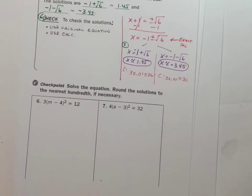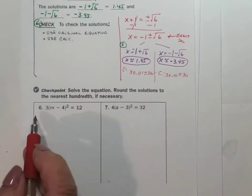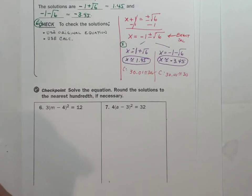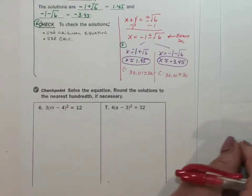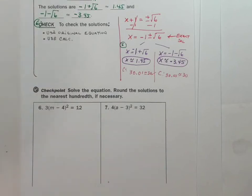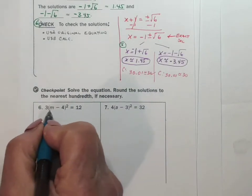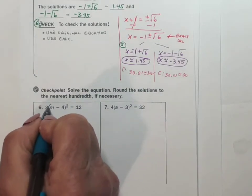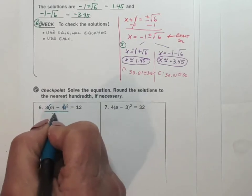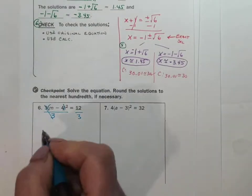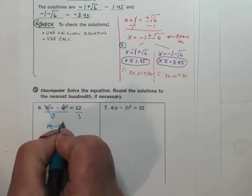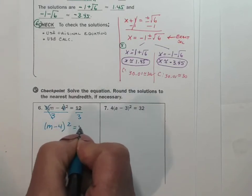So I'm going to work with you through these two problems because this is a really new concept for most students. If you want to try to do them on your own, go for it. The first thing we do is we've got to isolate our binomial square. So we divide both sides by three, and we are left with m minus 4 squared equals 4.